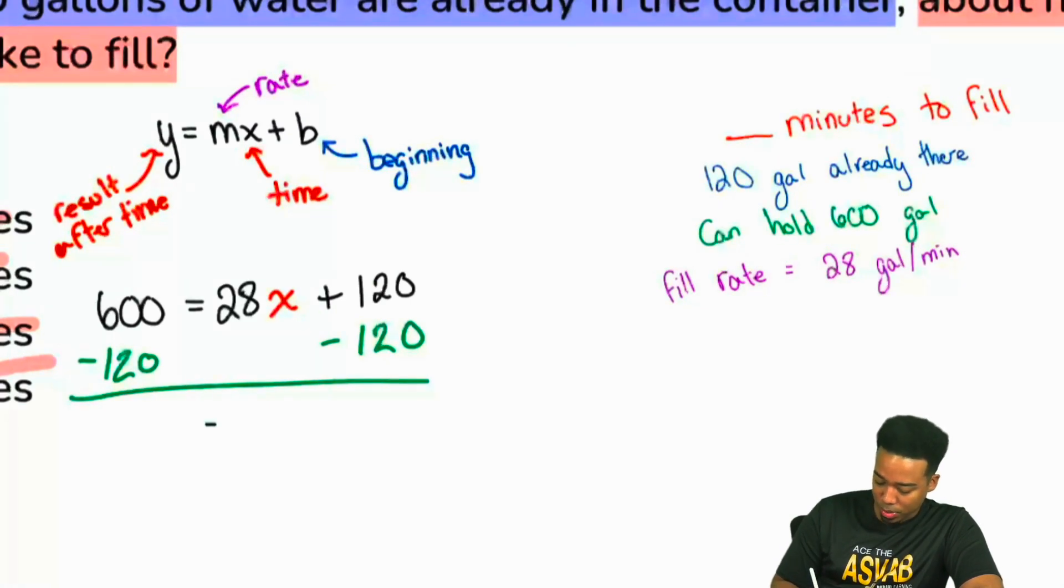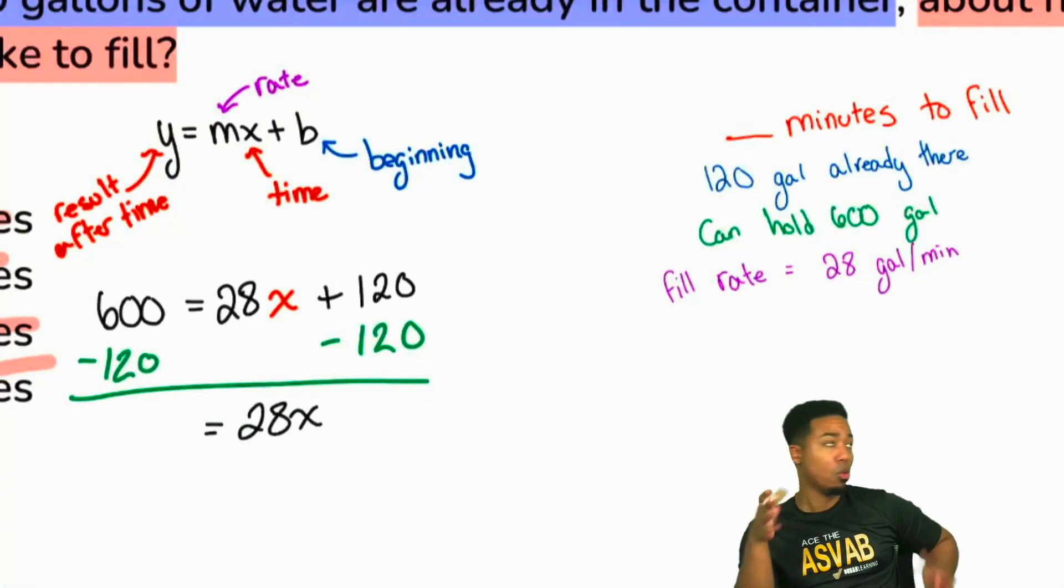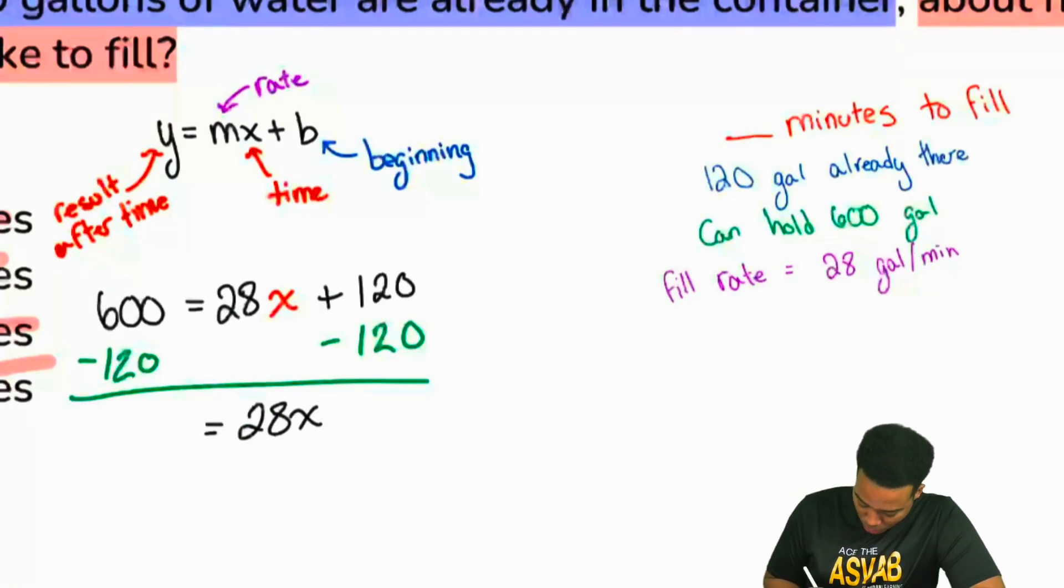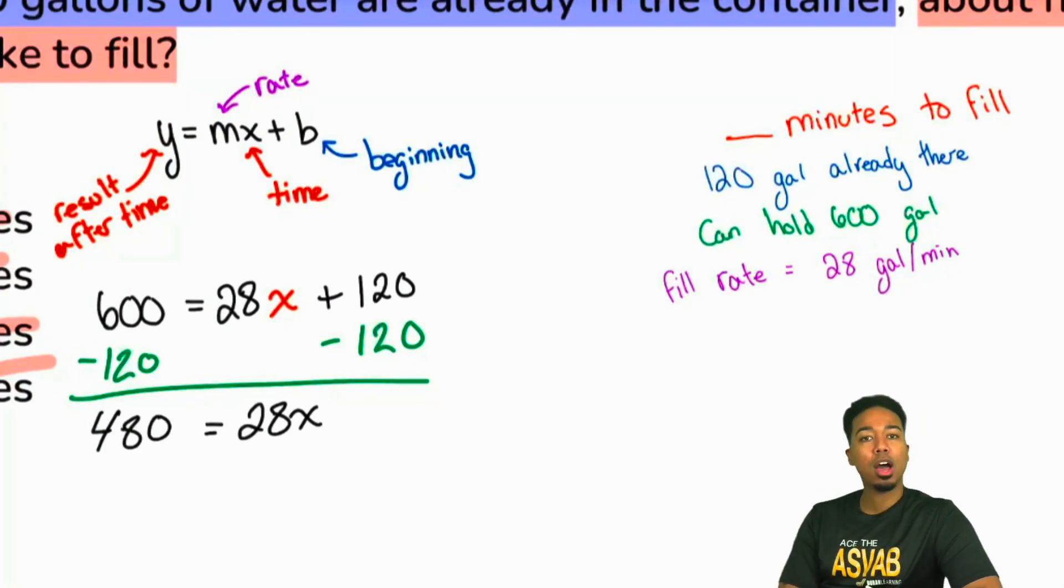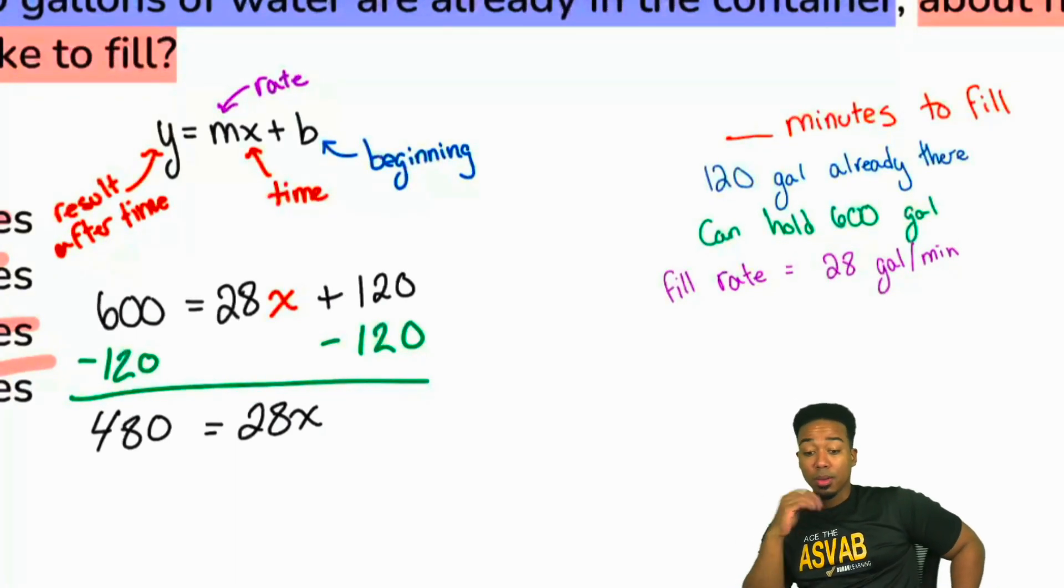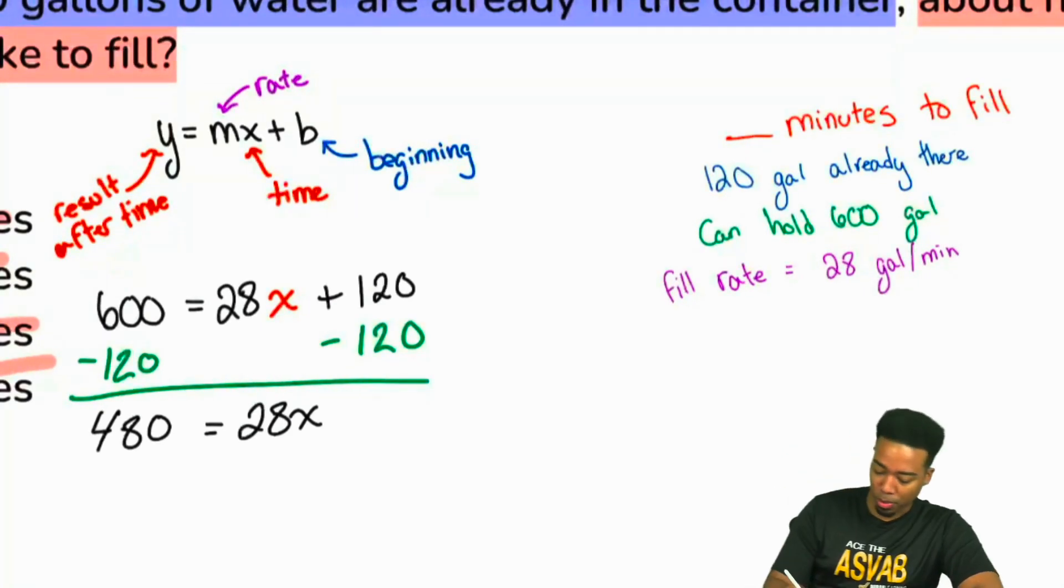So everyone, we still have the 28X on the right side. But what is 600 minus 120, or 60 minus 12? What's that going to be? Right, that's going to be 480. Nice and easy. So we have 480. And now our job is going to be to do what to both sides? What's the opposite of multiplying X by 28? Right, that's going to be dividing 28 on both sides.